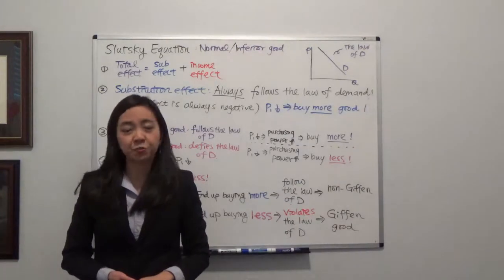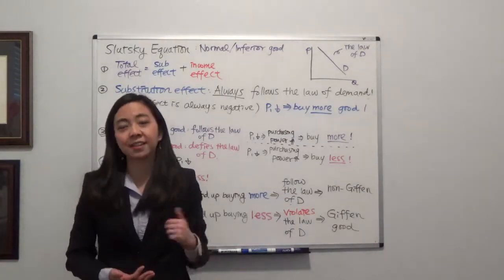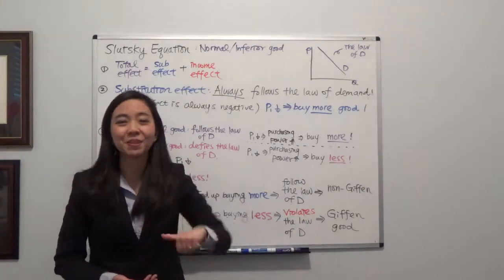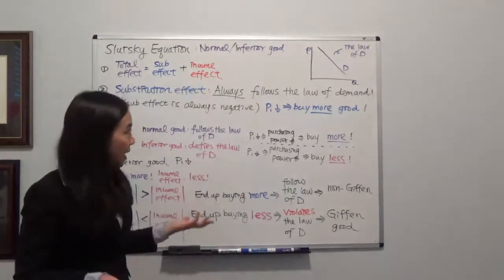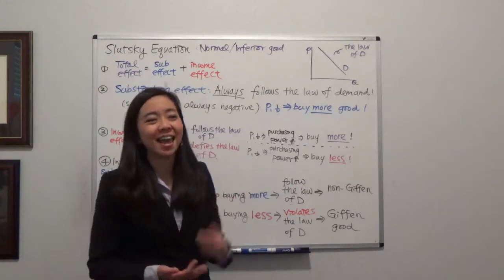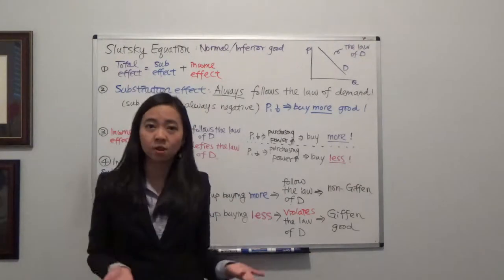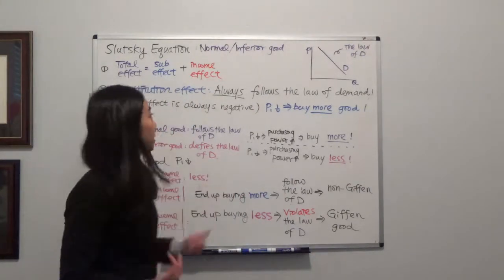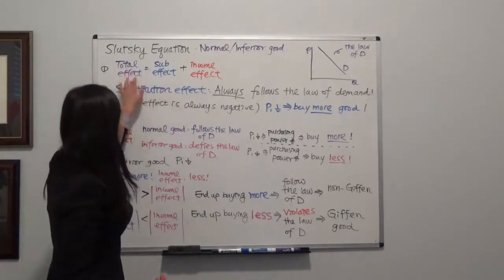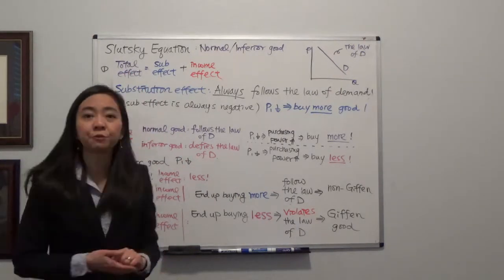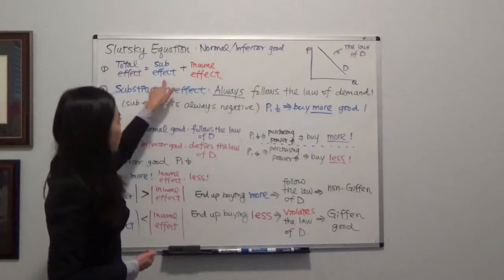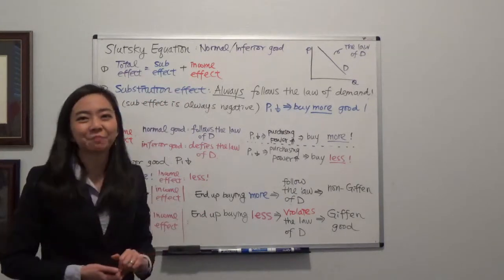When the price of a good changes — say if the price of good one goes down — then most likely the quantity demanded is going to change. The change in quantity demanded we call the total effect. And we can decompose the total effect into substitution effect and income effect.